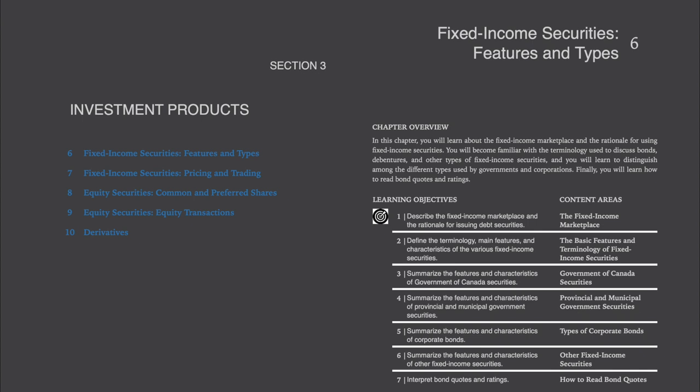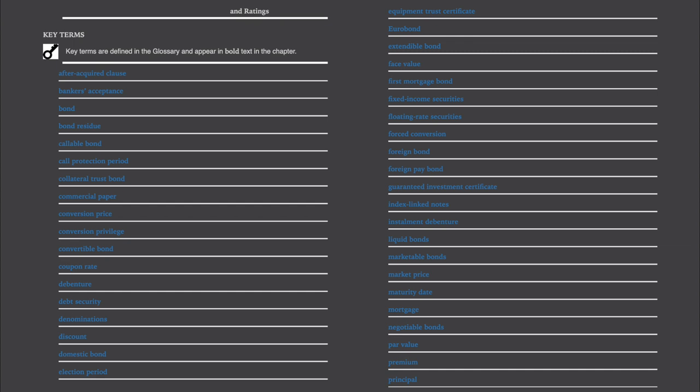There are seven main areas to this chapter: 1. The Fixed Income Marketplace; 2. The Basic Features and Terminology of Fixed Income Securities; 3. Government of Canada Securities; 4. Provincial and Municipal Government Securities; 5. Types of Corporate Bonds; 6. Other Fixed Income Securities; 7. How to Read Bond Quotes and Ratings.